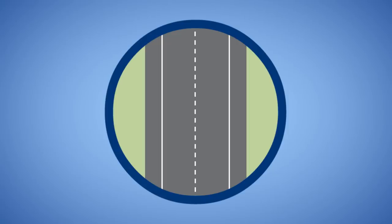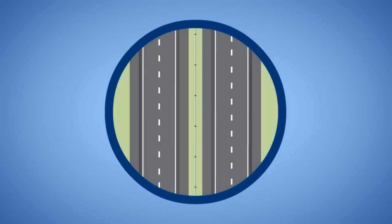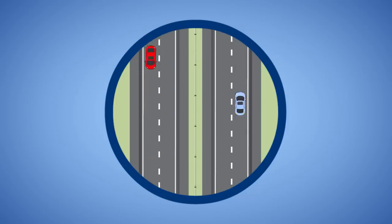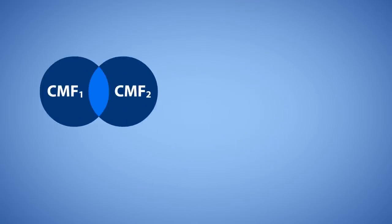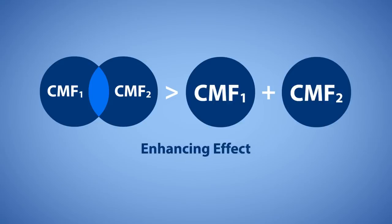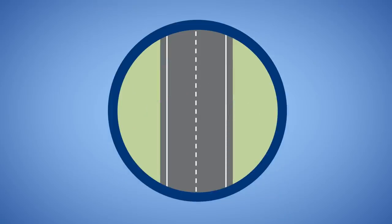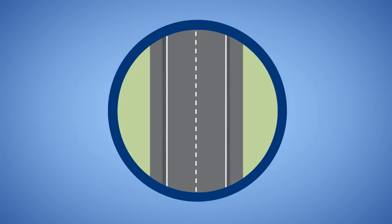In many cases, there is likely some overlap, where both countermeasures provide an added benefit, but the second countermeasure has some overlap with the first. For example, cable median barrier and inside shoulder rumble strips on a four-lane, median-divided facility may have some overlapping effects. The cable barrier and inside shoulder rumble strips both target cross-median crashes. There may be an added benefit as the inside shoulder rumble strips also target run-off-the-road-left crashes prior to the vehicle leaving the road.